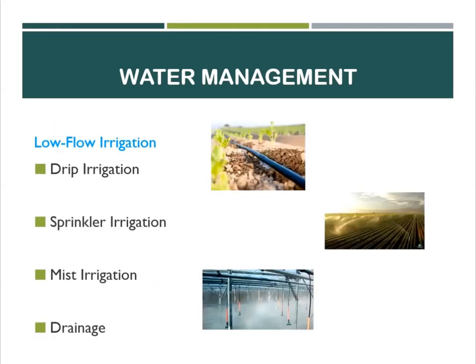We will now discuss low-flow irrigation. Drip irrigation is known as the most water-efficient method of irrigation. Water drops right near the root zone of the plant in a dripping motion. If the system is installed properly, you can steadily reduce the loss of water through evaporation and runoff.